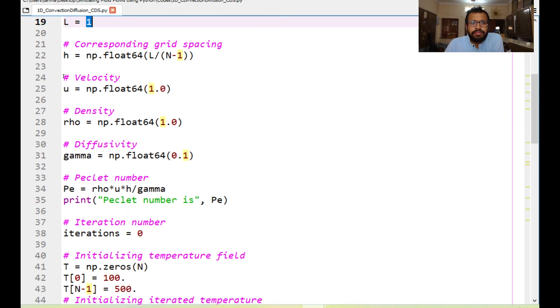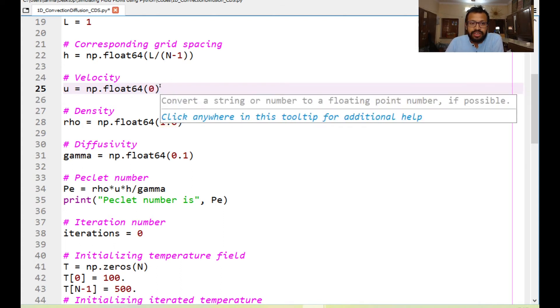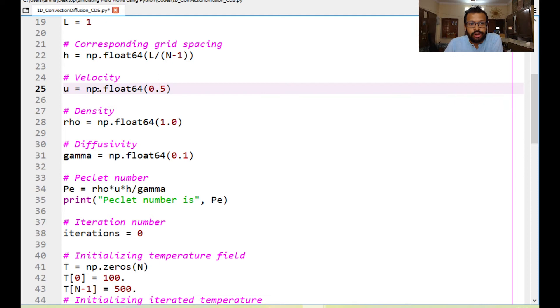The convection problem always includes a convection velocity and for that we are using the U velocity here and note that I'm using the float64 type rather than an integer because even though the magnitude is 1 meter per second, if it's something smaller it is always better to use a floating point type data sets for the variables that you're using and float64 gives you more precision and more control over the variables.